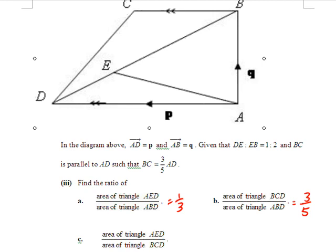Now, let us take a look at the last part of this question. Find the ratio of area AED and ratio of area BCD.